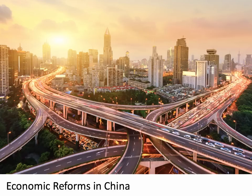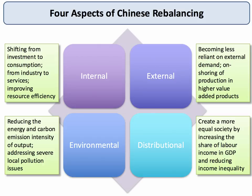Essentially the guiding line between reforms is the move from old China, which was investment driven, towards new China which is consumption driven. In our second video we focused on the four aspects of Chinese rebalancing: internal — for example shifting from investment to consumption; external — becoming less reliant on exports as a source of growth; environmental — trying to decouple their growth from environmental impact and addressing major pollution problems; and the distributional aspect — trying to create a more inclusive and higher quality growth which benefits people across the country.